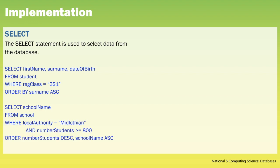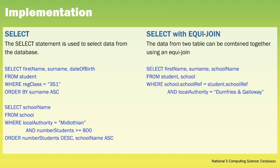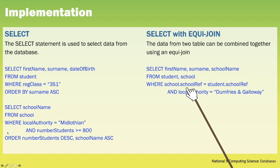In this second example, we are selecting the school name from the school table for all schools that are in the Midlothian local authority and with more than 800 pupils. The results will be sorted in descending order of students and then alphabetical order of school name, should two schools have the same number of students. We may also need to perform an SQL SELECT query with an Equijoin, and this is where data from two tables can be combined. An Equijoin is where we state the primary key of one table equals the foreign key in the other table.